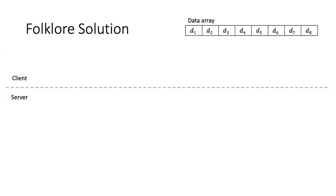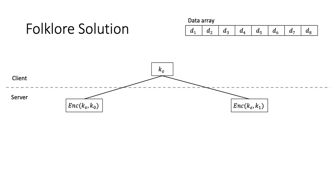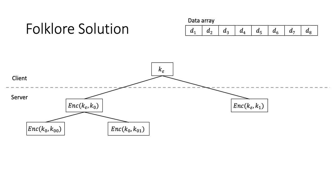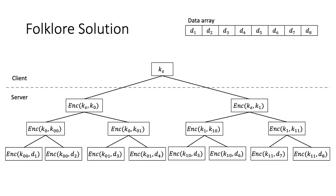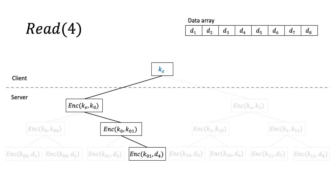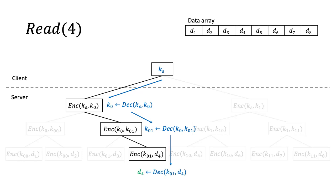There is also a folklore solution that's a tree-based scheme. On the client side we have one key K-epsilon, the root of this tree, and it encrypts its two children K0 and K1, which we store as ciphertexts on the server. Then each of K0 and K1 encrypts their children, and at the end the leaves are encryptions of the eight data items under their parents. To read, say we want the fourth data item: we take K-epsilon, decrypt K0, then using K0 decrypt K01, and finally decrypt D4. This has O(log n) overhead.